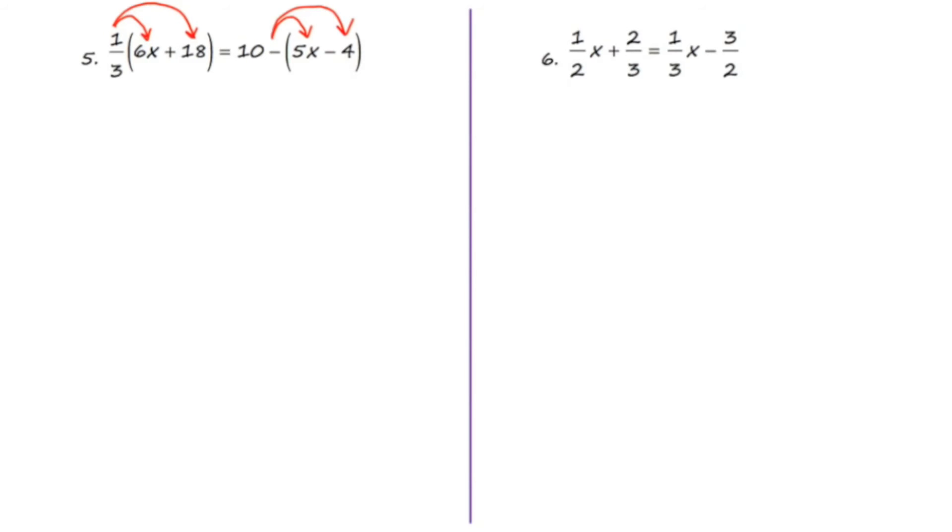Let's start, and we're going to work from left to right. One-third times 6x is 2x, one-third times 18 is 6, a 10 is just a 10, a negative 1 distributed into a 5x is negative 5x, and a negative 1 distributed into a negative 4 is positive 4. Now we have like terms on the right-hand side. This 10 and 4 are both constants, so they can be combined. So I'm now going to write 2x plus 6 is equal to 14 minus 5x.